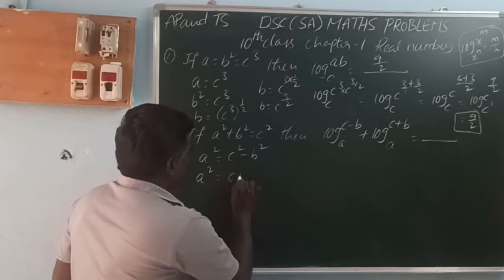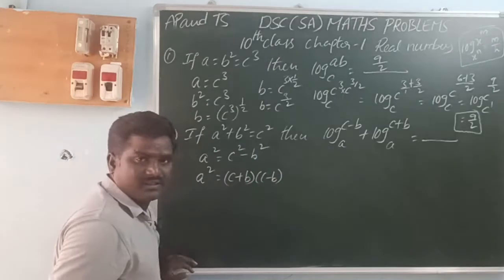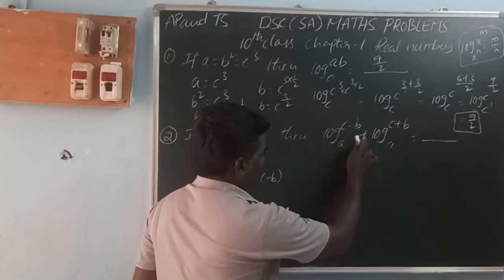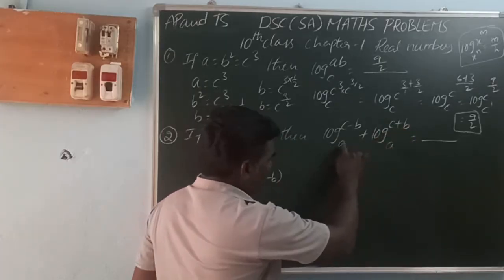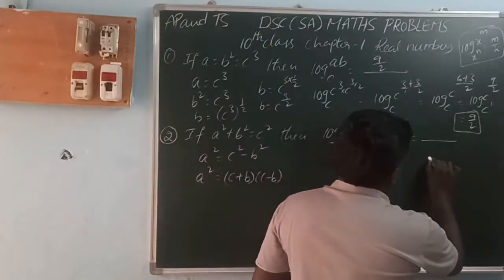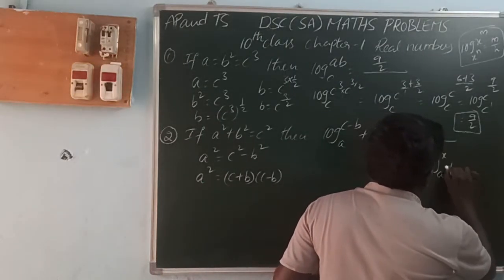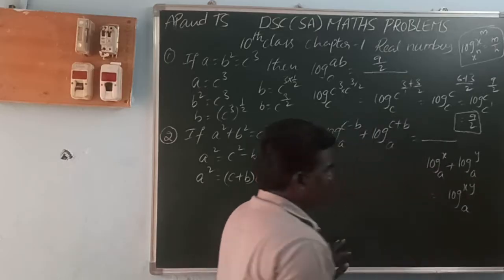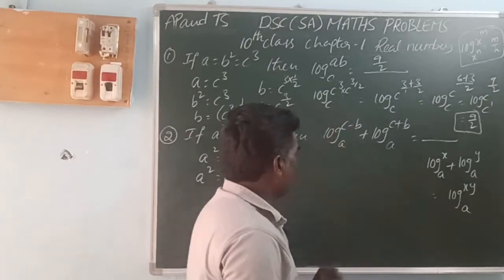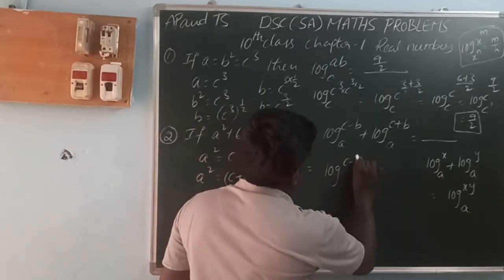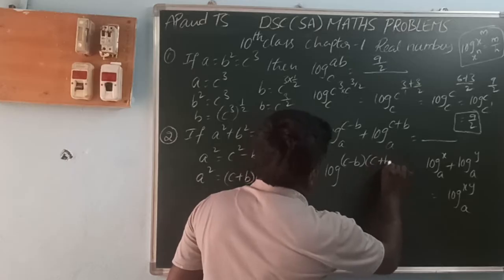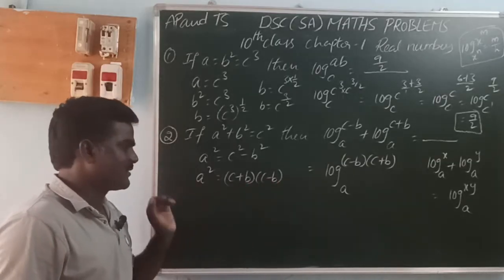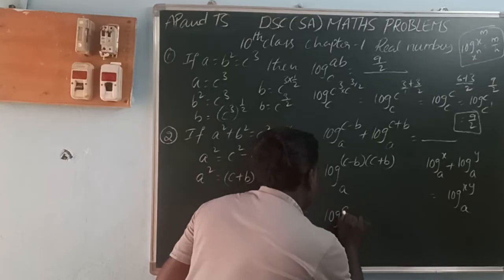So a squared equals c plus b times c minus b. Now log(c minus b) base a plus log(c plus b) base a. We have two logs added, so we use the formula: log x base a plus log y base a equals log(xy) base a. That gives log[(c minus b)(c plus b)] base a, which equals log(a squared) base a.